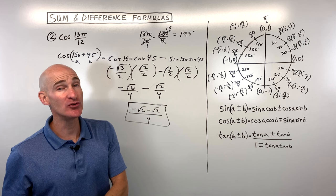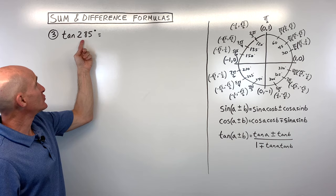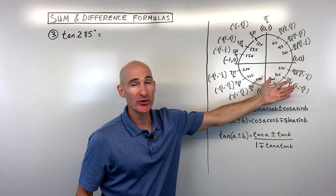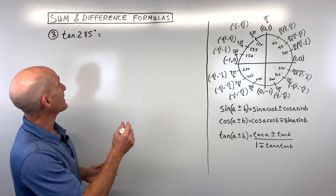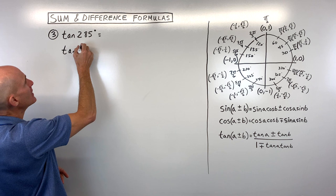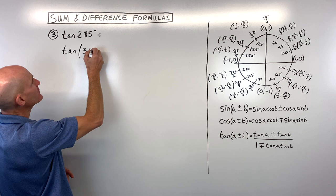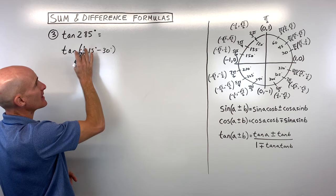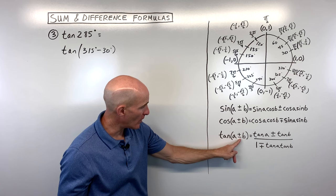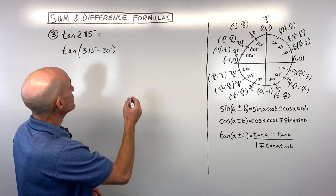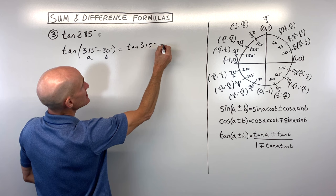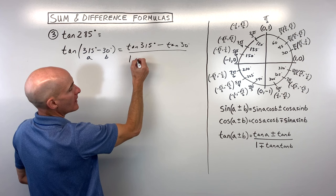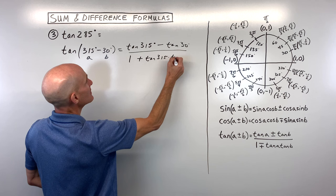For example number three, we've got the tangent of 285 degrees — again, not on the unit circle. Are there two angles that add or subtract to 285? Let's subtract this time: 315 minus 30 equals 285. Going to our tangent difference formula, A is 315 and B is 30. So we set up: [tan(315) − tan(30)] / [1 + tan(315) × tan(30)].